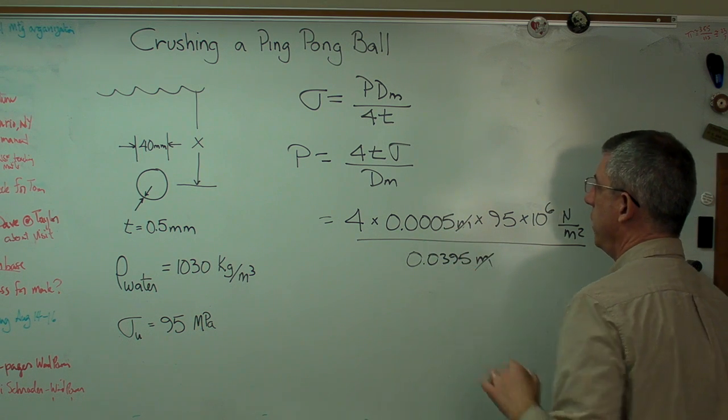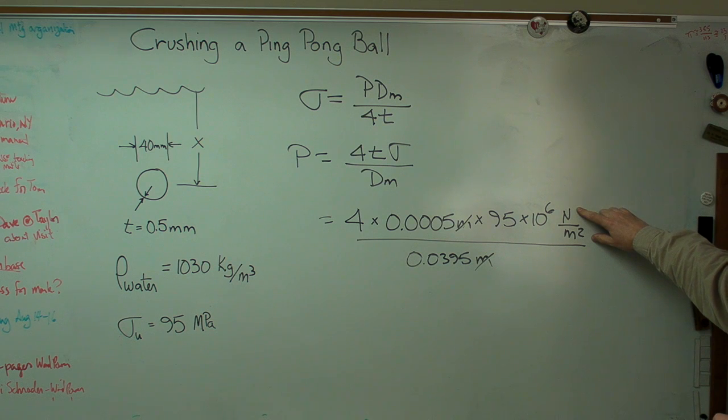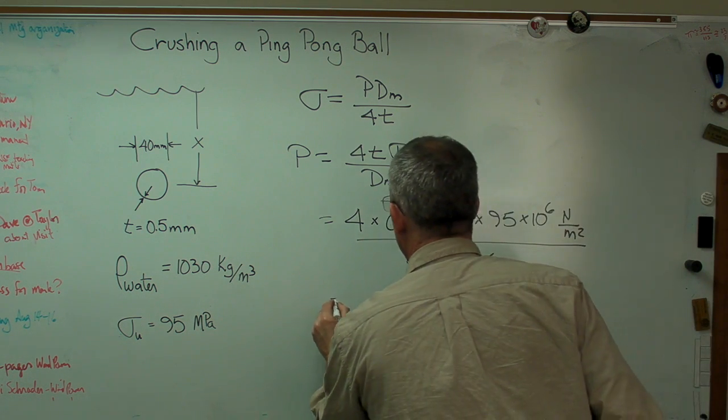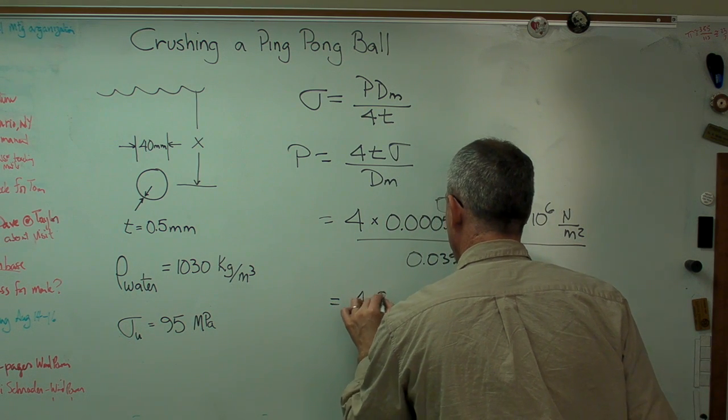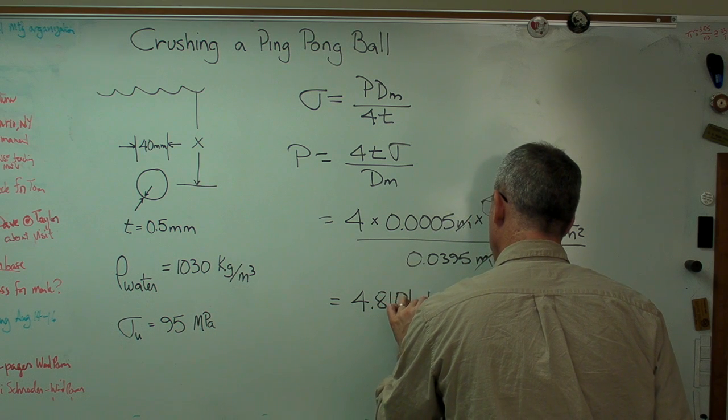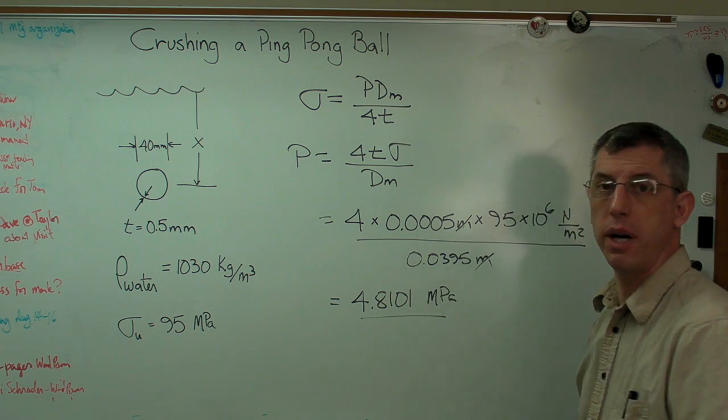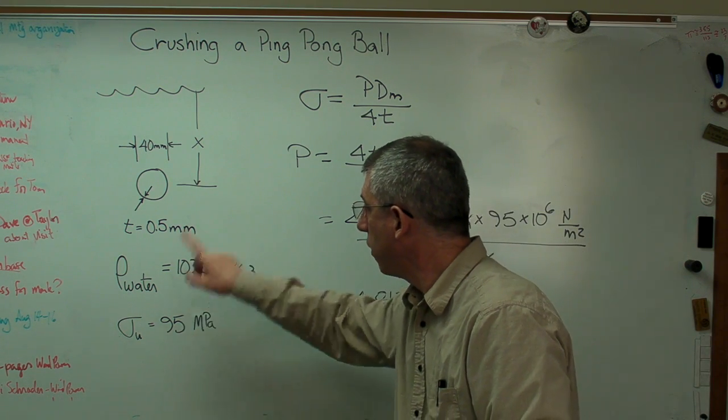That unit, meters and meters are going to cancel out. I will get newtons per square meter. That's a pressure. That's what I'm looking for. If you work this out, you'll find out you get 4.8101, I believe, megapascals. That's the pressure it takes to crush a ping pong ball if it's got those properties.